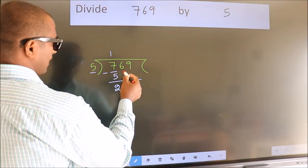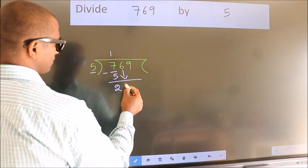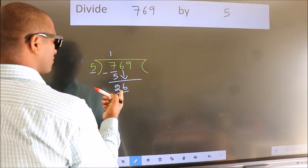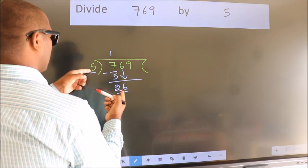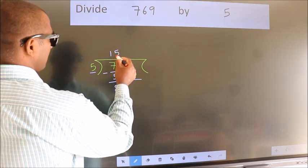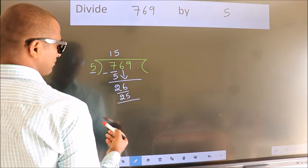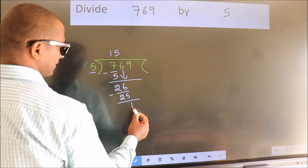After this, bring down the beside number. So 6 down. So 26. A number close to 26 in the 5 table is 5 5s 25. Now we subtract. We get 1.